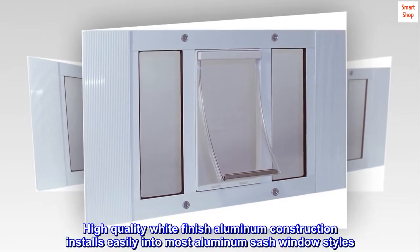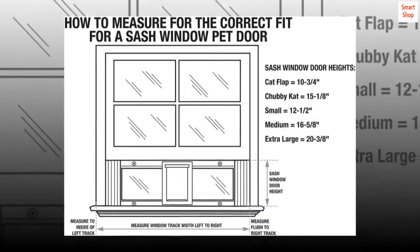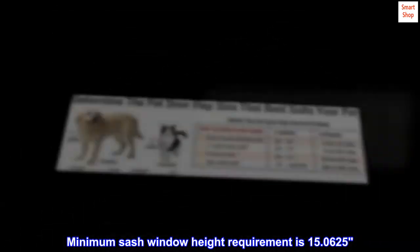High-quality white finish aluminum construction installs easily into most aluminum sash window styles. Minimum sash window height requirement is 15.0625 inches.